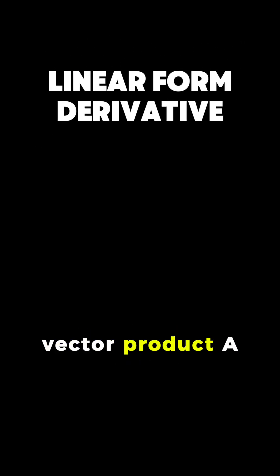Consider the matrix vector product A times X. Here, A is a 2 by 2 matrix and X is a vector.